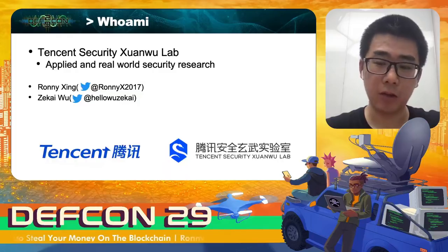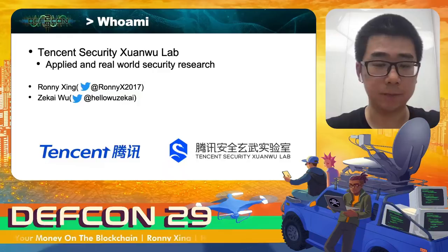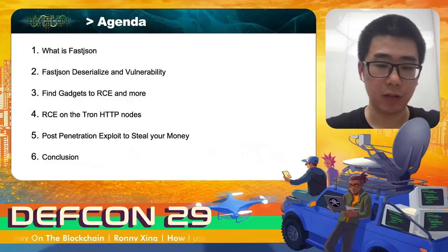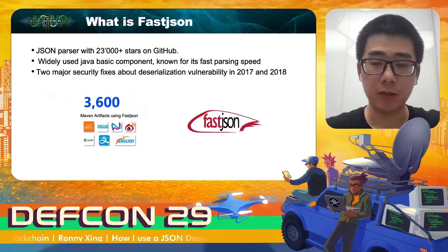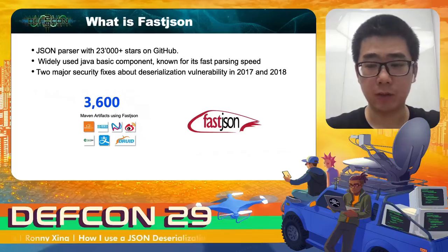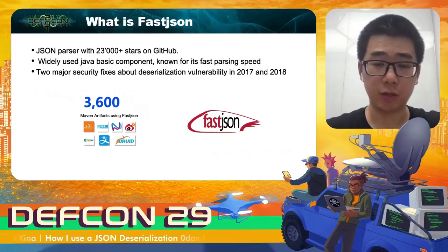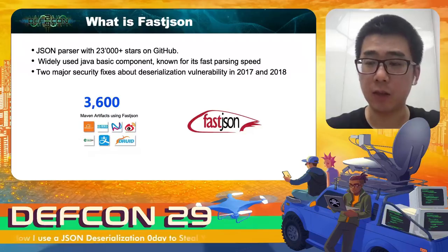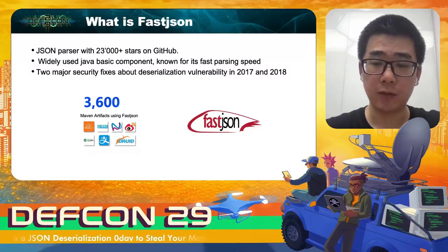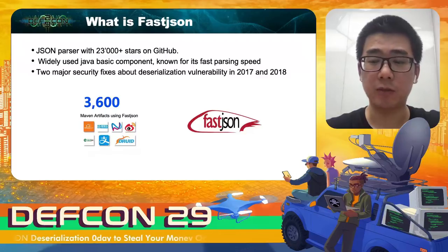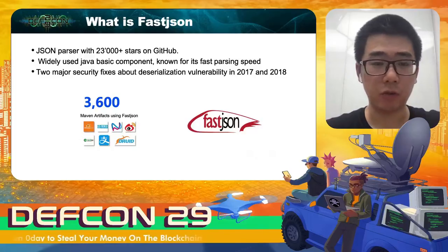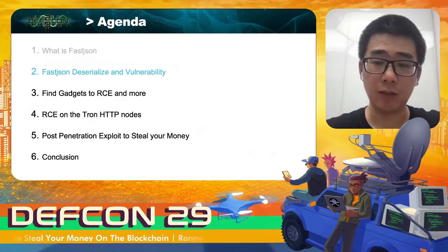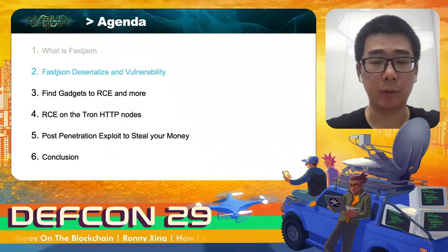Our Shenmue Lab outputs many outstanding achievements such as BipTunnel. Here is the outline of our talk. First, I will introduce FastJSON briefly. FastJSON is a widely-used open-source JSON parser with 23,000 stars on GitHub, known for fast parsing speed. There are 3,600 artifacts using FastJSON on Maven, and as a basic module of Alibaba's Java Web Service, it serves hundreds of millions of users. I will detail the deserialization process, the security check in FastJSON, and the vulnerability to bypass the check.